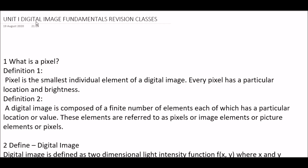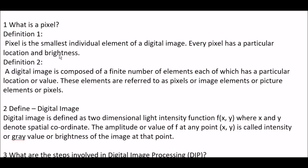Let's begin. Your first question is: what is a pixel? The answer is — two definitions of pixels are available. First one: a pixel is the smallest individual element of a digital image. Every pixel has a particular location and brightness.